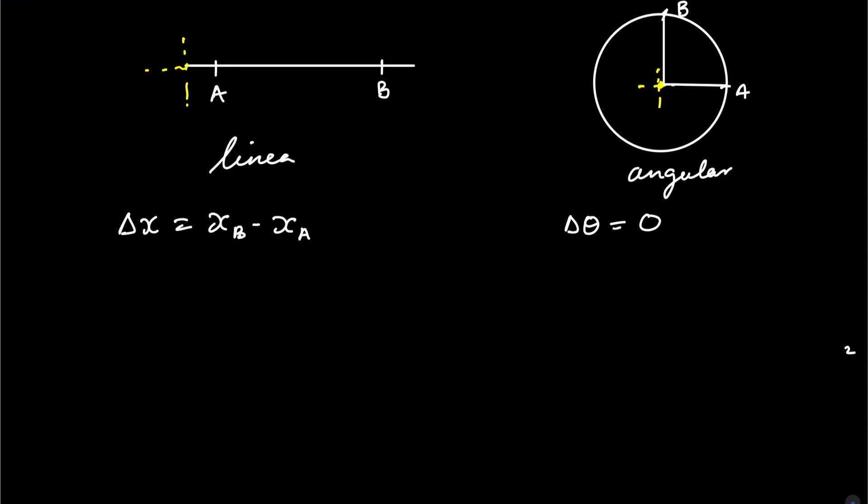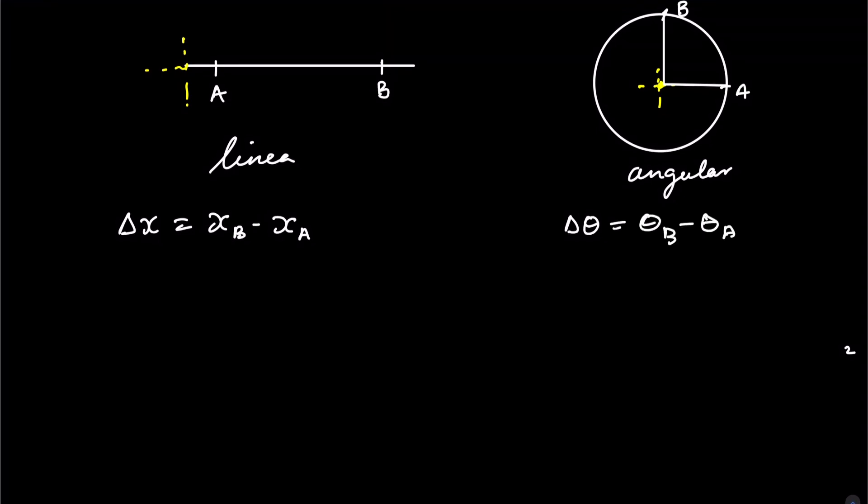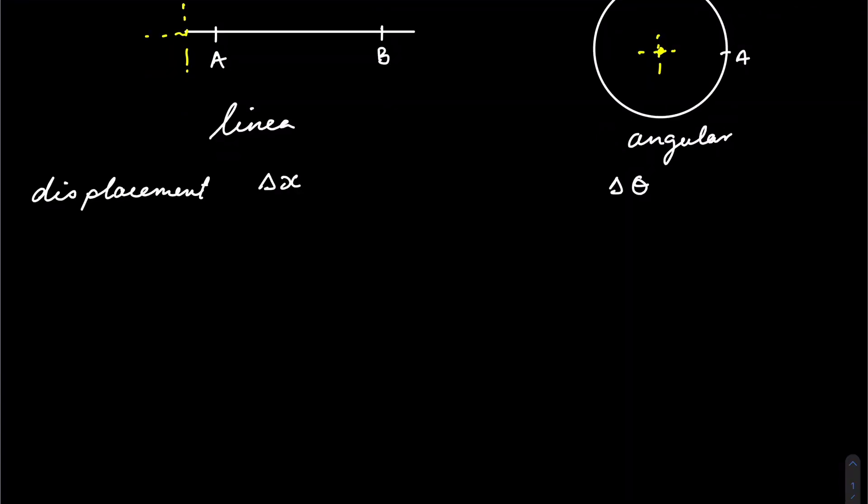The straight line from A to B is the displacement in linear space. This can also be found, but we're not going to be using it at the present moment. Instead, we will be focusing on the arc length, which depends on the radius multiplied by a change in angle. So this side will be the linear motion, and this side will be the angular motion.